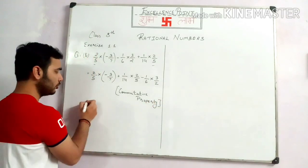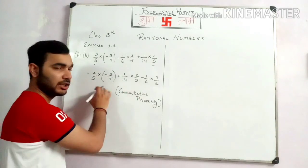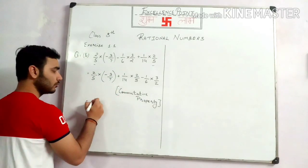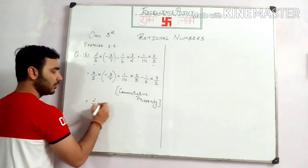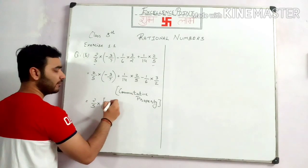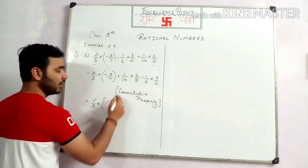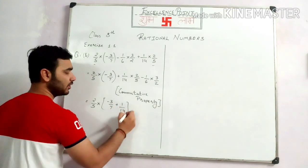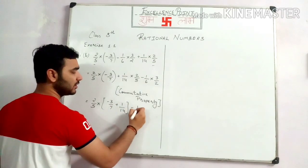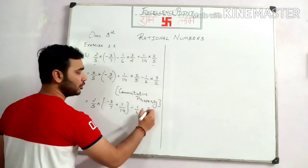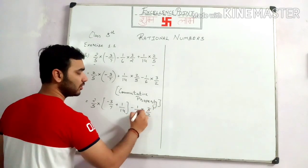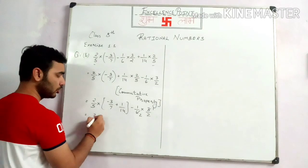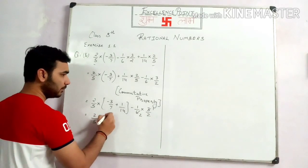Now we have to take 2 by 5 as common. So 2 by 5 multiplied by the remaining terms: minus 3 by 7 plus 1 by 14, minus 1 by 6 into 3 by 2. Now 3 ones are 3 and 3 twos are 6, so 2 by 5 multiplied by that result.